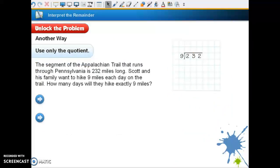Here is another way on page 88. Another way. Use only the quotient. So this time we're only going to have to use the quotient. We could take a mile and divide it up into parts. We can't always divide something up into parts. And so this time it says we're only going to use the quotient. The segments of the Appalachian Trail that runs through Pennsylvania is 232 miles long. Scott and his family want to hike 9 miles each day on the trail. How many days will they hike exactly 9 miles? So how many days will they hike exactly 9 miles? Now we might come out with the remainder, but we're only going to use that quotient to find out how many times they will do that.